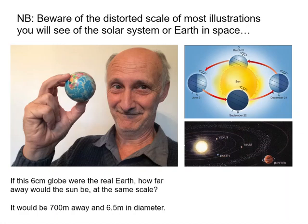I need to issue a warning: beware of the distorted scale of illustrations you'll see of the solar system or of Earth in space. This six-centimeter globe I'm holding up — if that were the real Earth, how far away would the sun be at the right scale? Well, if the Earth was six centimeters across, the sun would be 700 meters away and six and a half meters in diameter. So when you see these diagrams, remember the scale is necessarily very compressed to fit the picture usefully onto a page.